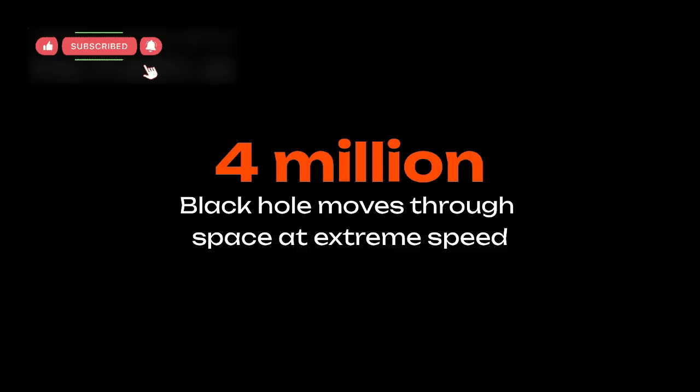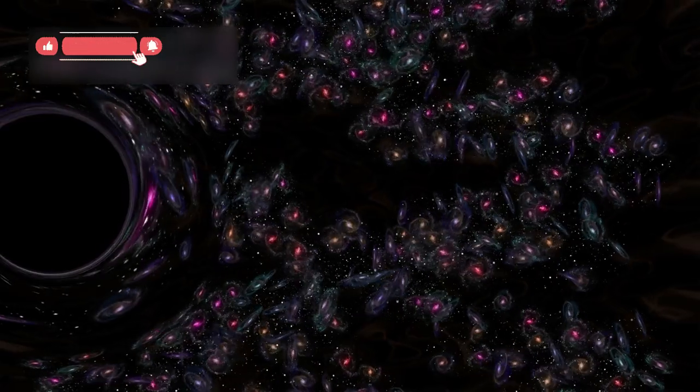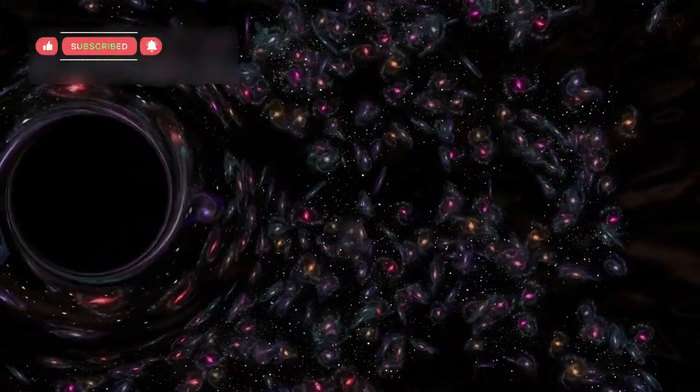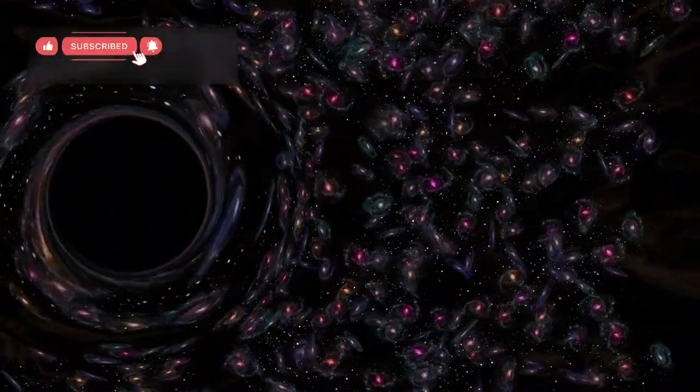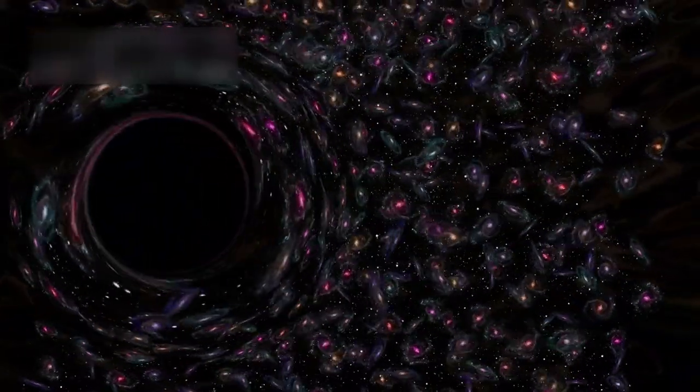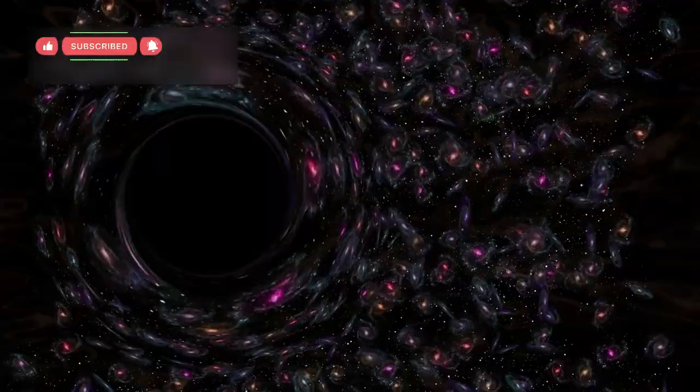This newly identified black hole is moving through intergalactic space at an astonishing 4 million miles per hour, a speed so extreme that many astronomers initially questioned whether the data was accurate. But repeated observations confirmed it—this black hole is truly a runaway giant, drifting farther and farther from the galaxy that once held it tightly at its center.